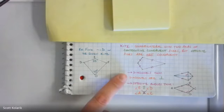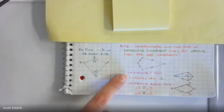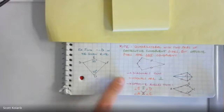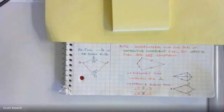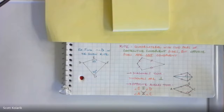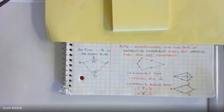As with all quadrilaterals, we can connect opposite corners on the inside to create diagonals. In a kite, these diagonals are perpendicular to one another. This will sound familiar — we've actually dealt with perpendicular diagonals in a previous shape: a rhombus, which is a special parallelogram where all opposite sides are congruent, including the very special case of a square.